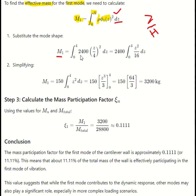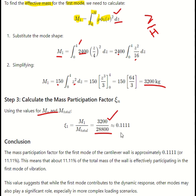Substituting rho equal to 2400 kg/m, M_1 equals 2400 times the integral from 0 to 4 of z²/16 dz. Dividing 2400 by 16 gives 150, so M_1 equals 150 times the integral from 0 to 4 of z² dz, which equals 150 times [z³/3] from 0 to 4. Since 4³ equals 64, M_1 equals 150 times 64/3, giving an effective mass for the first mode of 3,200 kg. The mass participation factor is therefore M_1/M_total equals 3200/28800, approximately 0.111, or 11.11%.